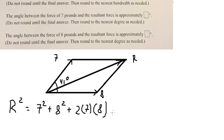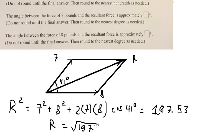So we apply this formula and we have 197.53. Now we put the square root on both sides, so we have R equals the square root of 197.53.